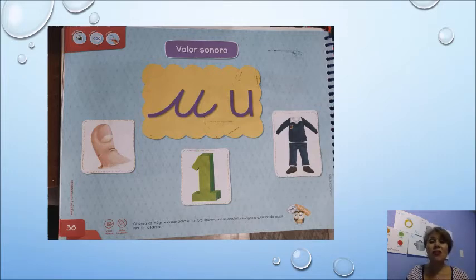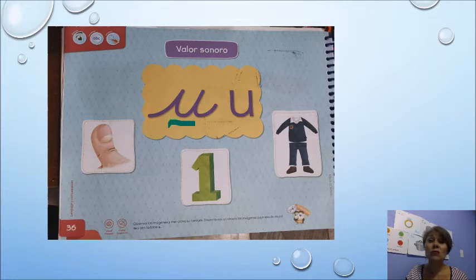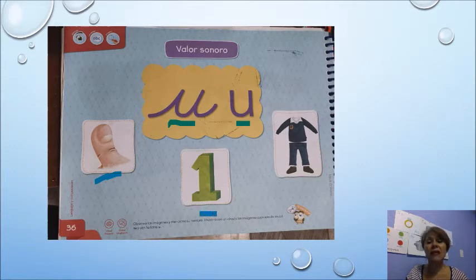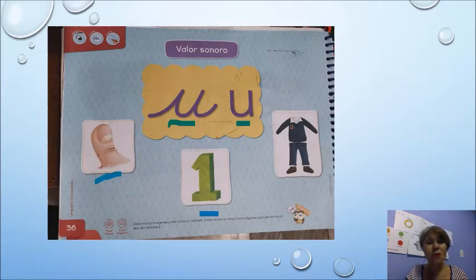Ahora vamos a iniciar con nuestras actividades del libro. En este cuadro amarillo tenemos la vocal U — esta es la U en letra cursiva y la otra es la U en letra script. Aquí tenemos tres imágenes que empiezan con la vocal U. Primero tenemos uña. ¿Qué número es este? Es el número 1. ¿Y con qué vocal empieza esa palabra? Con la U.